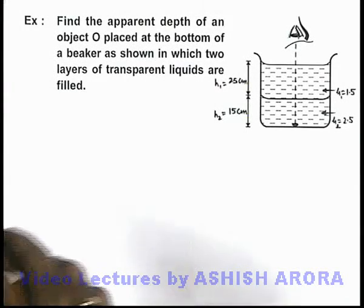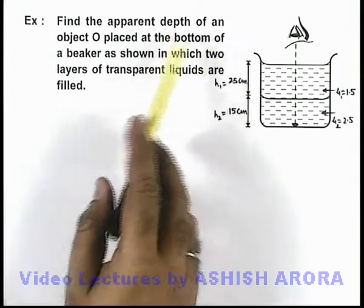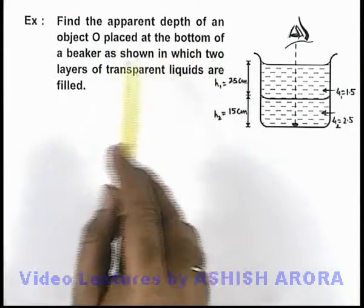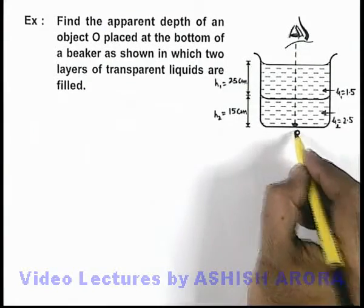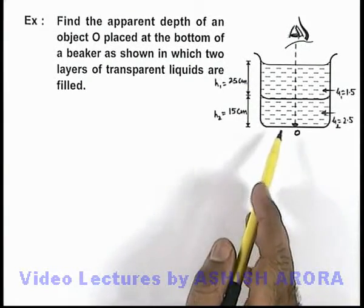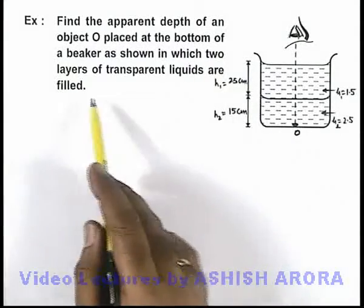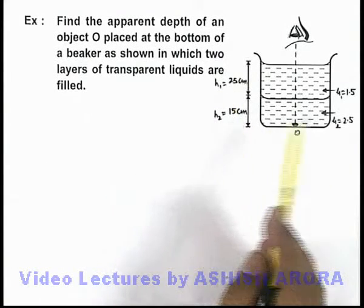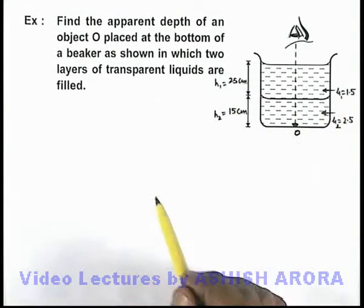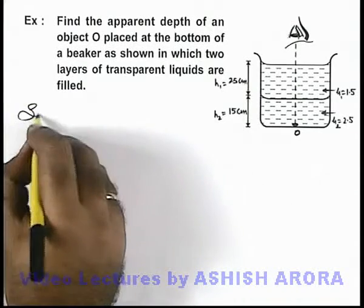In this example, we are required to find the apparent depth of an object O placed at the bottom of a beaker as shown. Here is the object O, which is placed at the bottom, in which two layers of transparent liquids are filled, having different depths h1 and h2 with refractive indices μ1 and μ2.